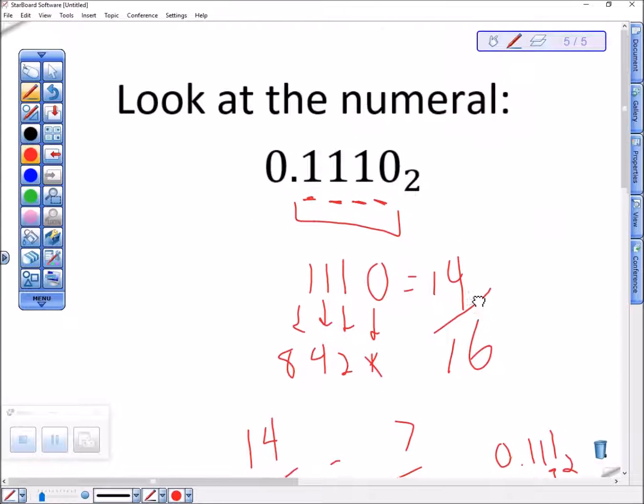So notice that this extra zero on the end doesn't change anything, but it makes it so that we'd have to reduce.